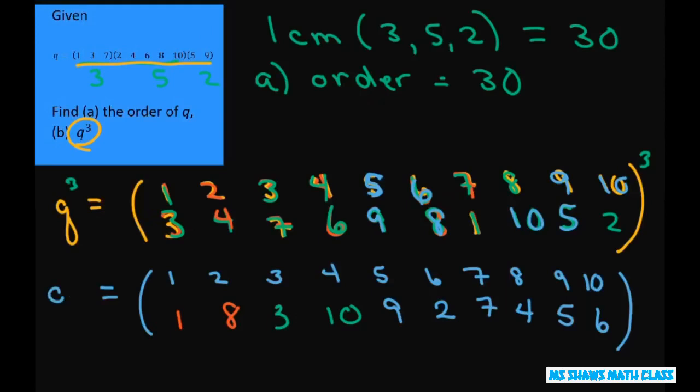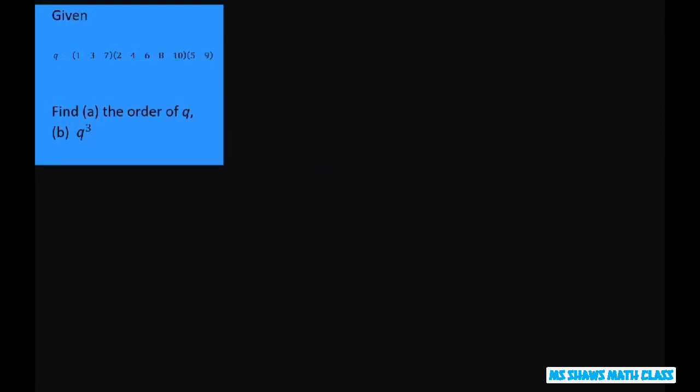So this is what it would be. This is what Q³ would be. Now we're going to write it down in cyclic notation. And so I'm going to copy this again. We had 1, 2, 8, 3, 10, 9, 2, 7, 4, 5, 6.